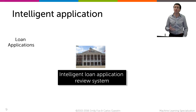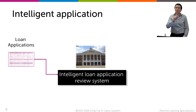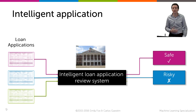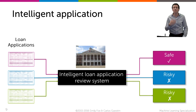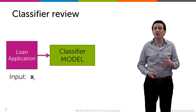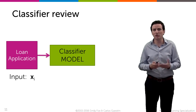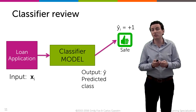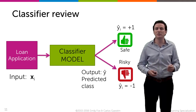A loan application system might look something like this. You get as input all that loan information that fills up a bunch of forms, it goes through a system — hopefully a machine learning system — which will make a prediction whether this loan is safe or whether it's risky. Some applications are going to be classified as safe while others will be classified as risky. We can view this loan application process as a classification problem: the input is X, all information about me and my loan, and the model outputs Y-hat equals plus one if it's a safe loan and Y-hat equals minus one if it's a risky loan.